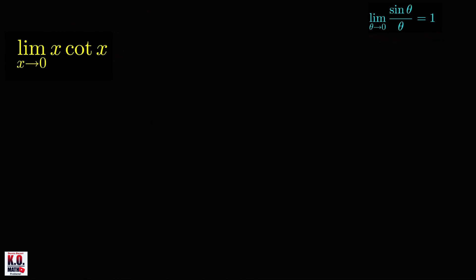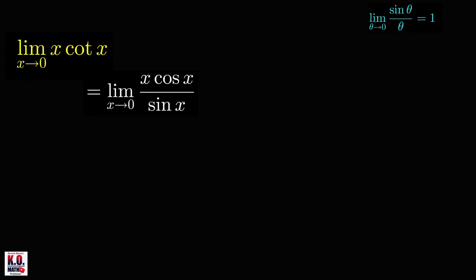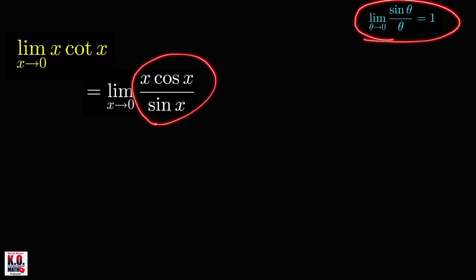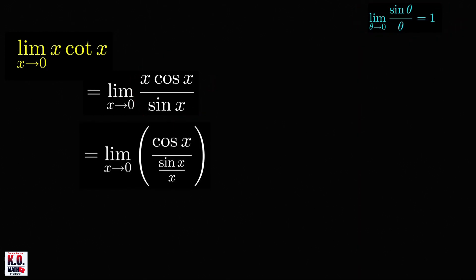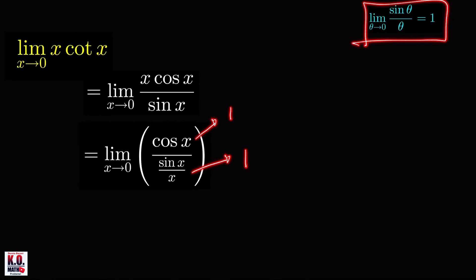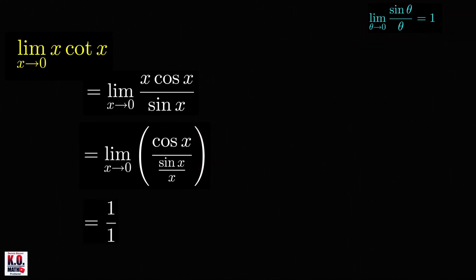We're going to use this fact to evaluate this limit. We can write x·cot(x) as x·cos(x) over sin(x), and because we want to use this fact, we write our function as cos(x) over (sin(x)/x). Here we can already evaluate the limit: cos(x) will approach cos(0) which is 1, and sin(x)/x will approach 1. Therefore, by the quotient rule the limit is equal to 1 over 1, which is 1.